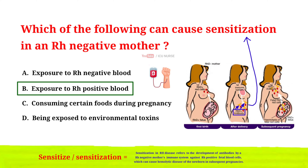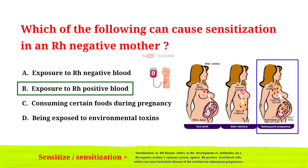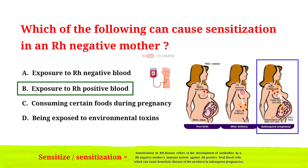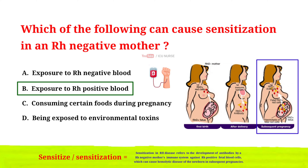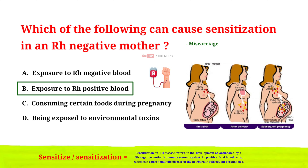Sensitization can occur during a woman's first pregnancy with an Rh positive baby, but it is more common in subsequent pregnancies. This is because during the first pregnancy, the baby's Rh positive cells may not have entered the mother's bloodstream in large enough numbers to trigger an immune response. However, during subsequent pregnancies with Rh positive babies, the mother's immune system may produce a stronger response, leading to sensitization. It is important to note that sensitization can also occur from exposure to Rh positive blood through other means, such as blood transfusion, a miscarriage, or ectopic pregnancy involving an Rh positive fetus.